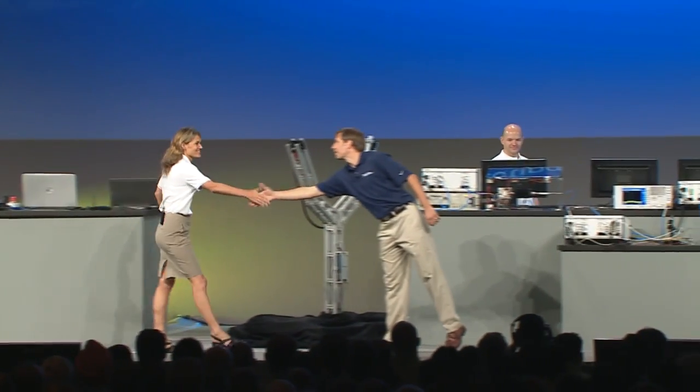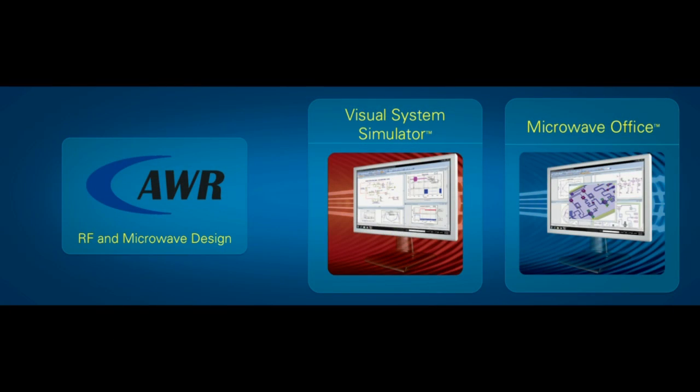Josh, welcome, Sherry. Welcome to NI. Tell us a little bit about AWR and your products. AWR is the innovation leader in high-frequency electronic design automation software. Our primary products are Microwave Office for RF and microwave circuit design, and Visual Systems Simulator, or VSS, for communication systems design. With our software, engineers design RF for wireless devices like smartphones, base stations, and satellite communication systems.